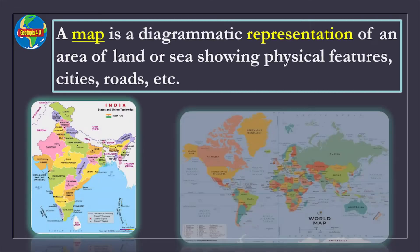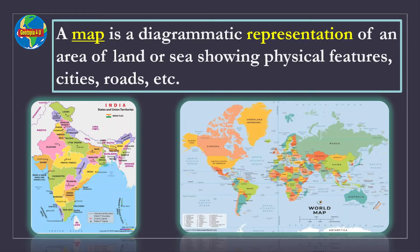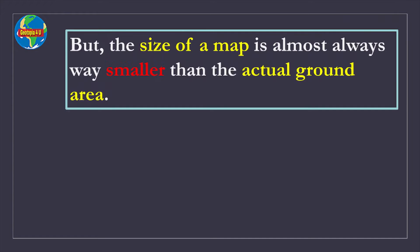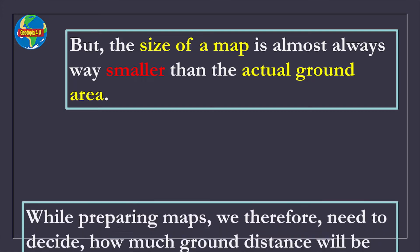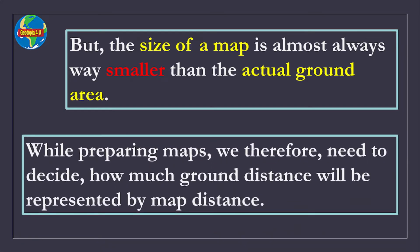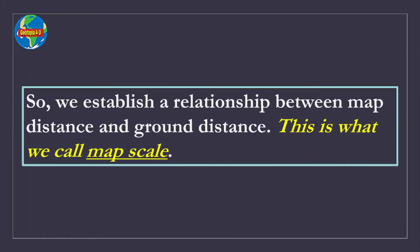A map is a diagrammatic representation of an area of land or sea showing physical features, cities, roads, etc. You can see the map of India and the map of the world on the left and right side of your screen respectively. The size of a map is almost always way smaller than the actual ground area. While preparing maps, we therefore need to decide how much ground distance will be represented by map distance. So we establish a relationship between map distance and ground distance. This is what we call map scale.